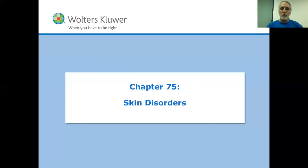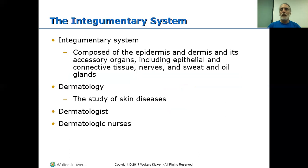Start off: the Integumentary System. The largest organ in the body. You have the epidermis and the dermis, as you're picking up in bio, and all of its accessory organs — epithelial tissue, connective tissue, nerves, and all the glands.